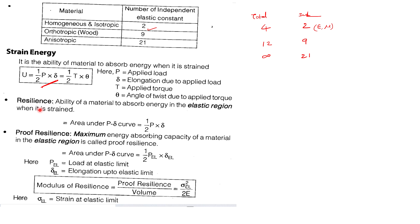Resilience is the ability of the material to absorb energy in the elastic region and release it when required. The formula is ½·P·δ. Proof resilience is the maximum energy stored. Modulus of resilience = proof resilience / volume = σ²/2E.